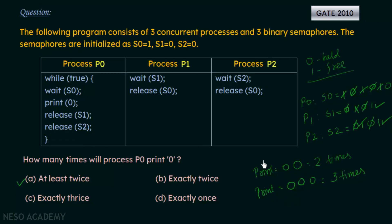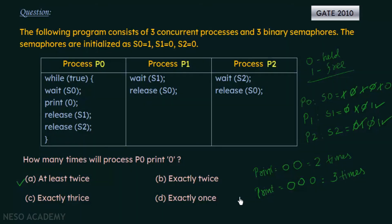So the answer is option A — at least twice — because the minimum number of times P0 prints is two and the maximum is three. We cannot say exactly twice because it can also print three times. Exactly thrice is also incorrect because it can also print two times. And exactly once is not the answer. You just need to keep in mind binary semaphore semantics — the meaning of 0 and 1 — and then you can analyze and solve it correctly.